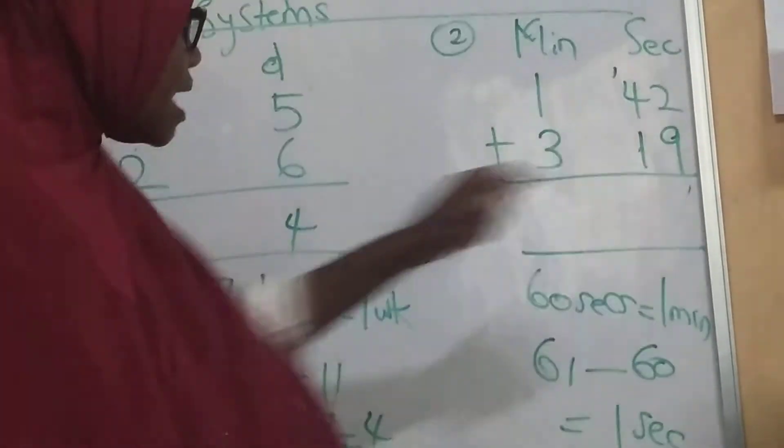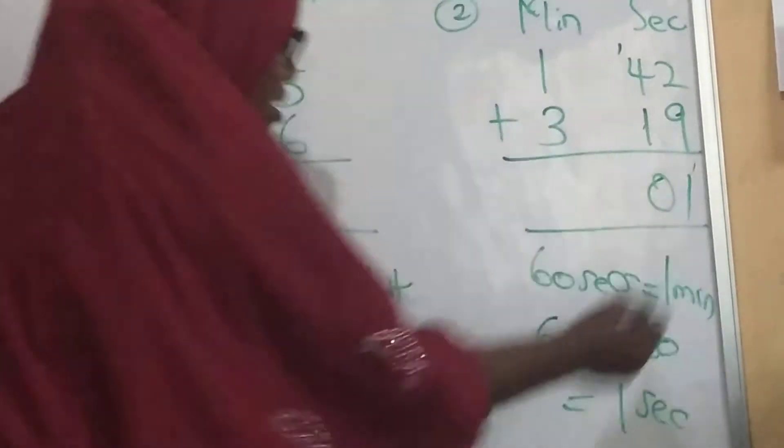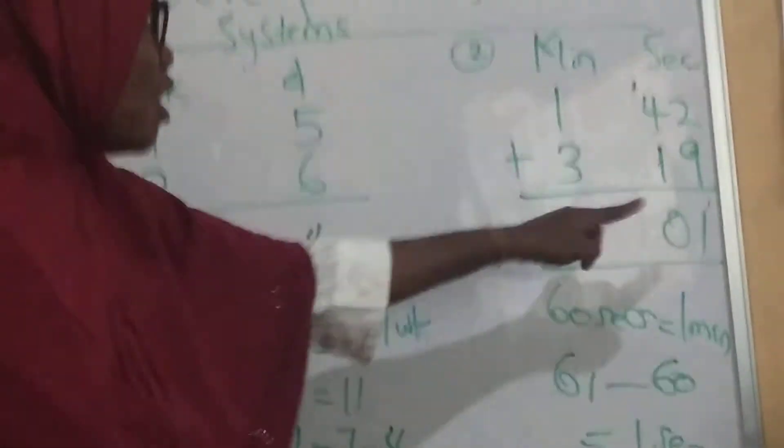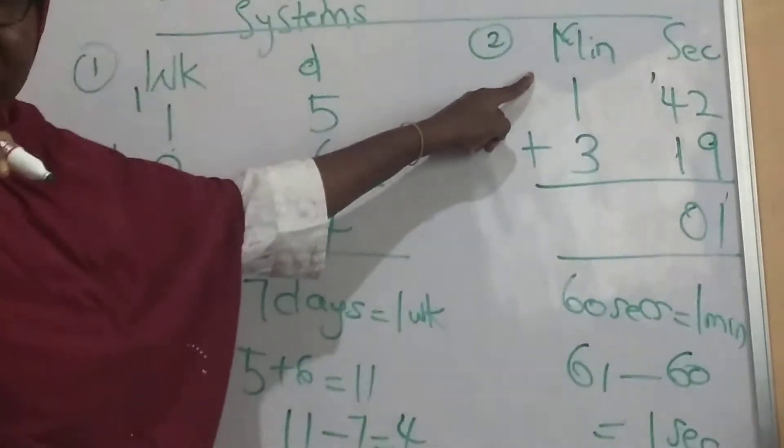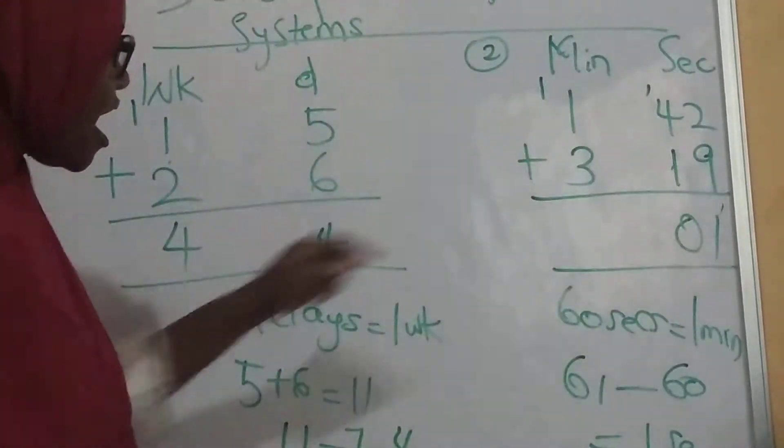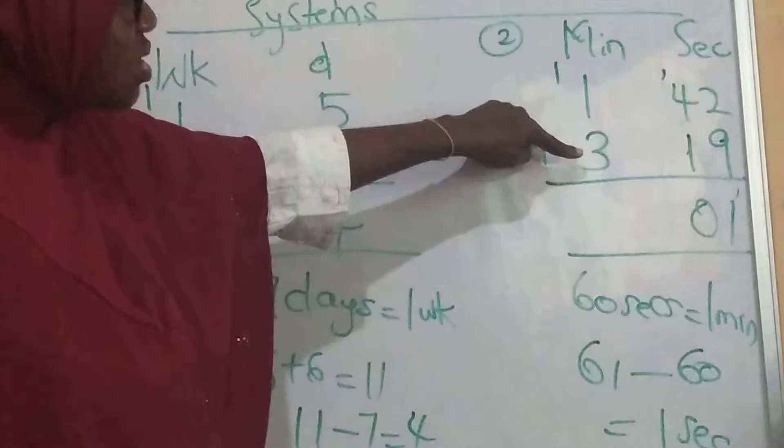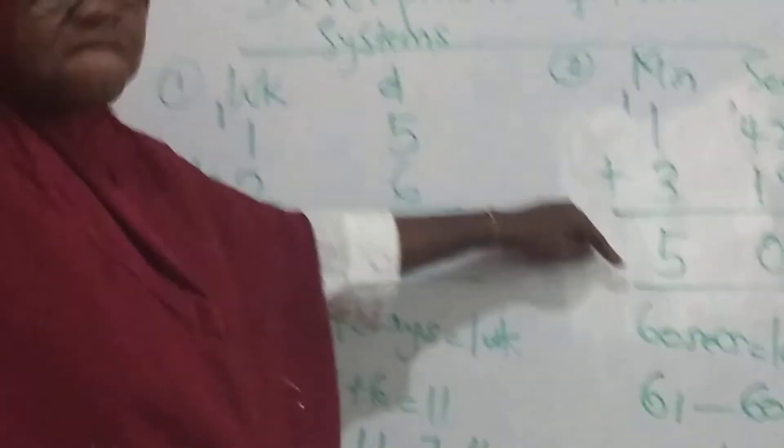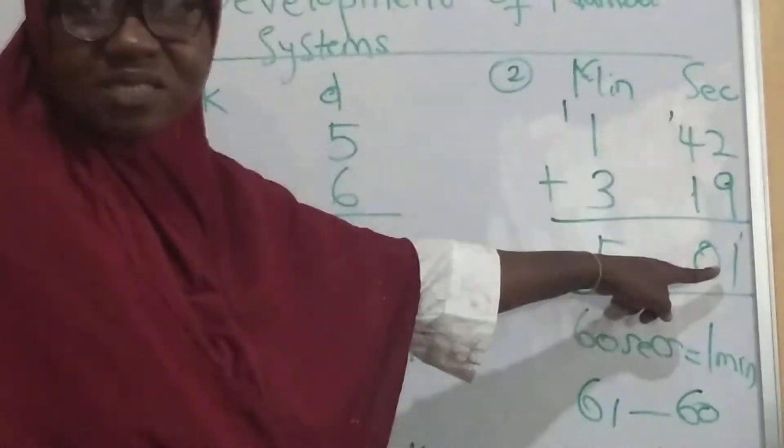Now it gives me one second, I'm going to write it here. I have one second here. Now this 60 seconds that I took away, that will turn towards one minute. So I'll add that one minute. So I have 1 plus 1 is 2, 2 plus 3 is 5. So altogether, what do I have? I have 5 minutes, 1 second.